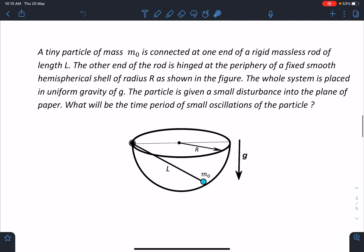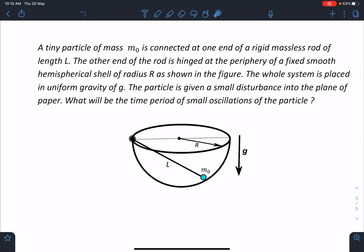Here is the problem statement. A tiny particle of mass m₀ is connected at one end of a rigid massless rod of length L. The other end of the rod is hinged at the periphery of a fixed smooth hemispherical shell of radius R as shown in the figure. The whole system is placed in uniform gravity of g. The particle is given a small disturbance into the plane of paper. What will be the time period of small oscillation of the particle?